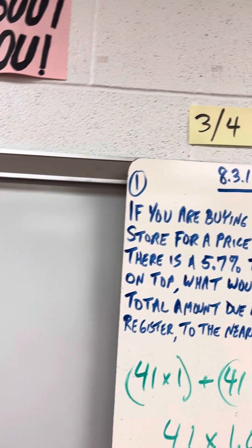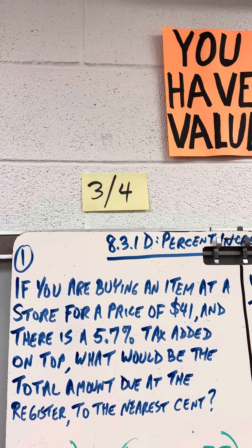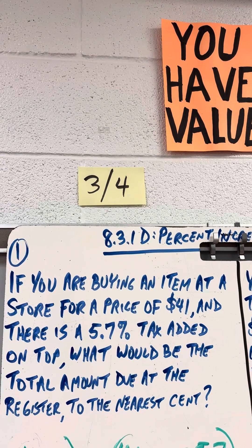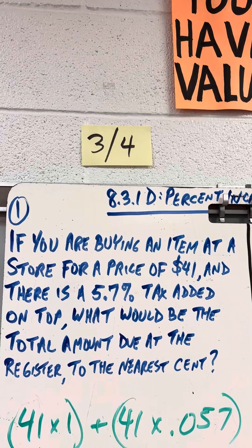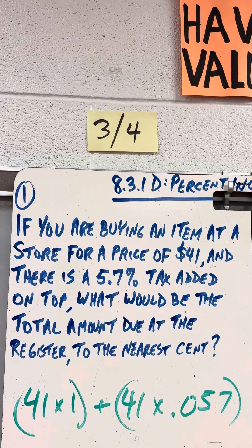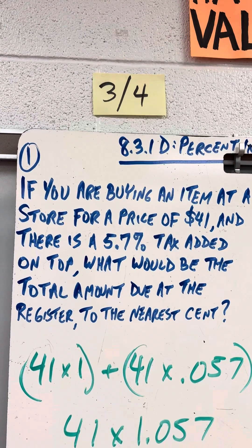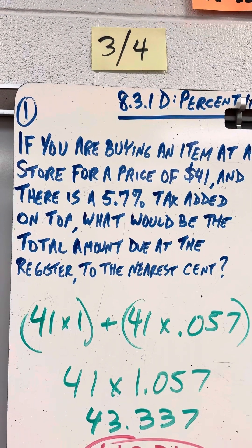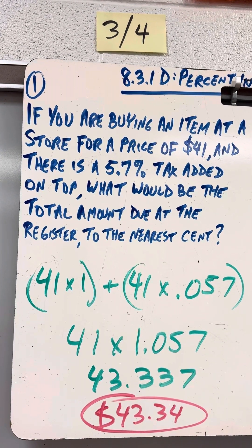For example, you are buying an item at a store for a price of $41 and there's a 5.7% tax added on top. What's the total amount paid at the register to the nearest cent? So instead of doing 41 times 1 plus 41 times 0.057, which is 5.7%, let's put it all together: 41 times 1.057 gives you 43.337, which is $43.34.